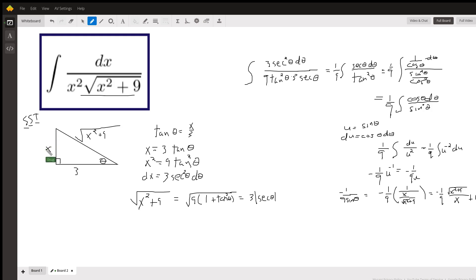Where we want X over 3 to have the X in the numerator. So I'll put that leg here, 3 here. The hypotenuse is the square root of X squared plus 9. And then I can do all this substitution. The tangent of theta opposite over adjacent. So X equals 3 tangent theta.